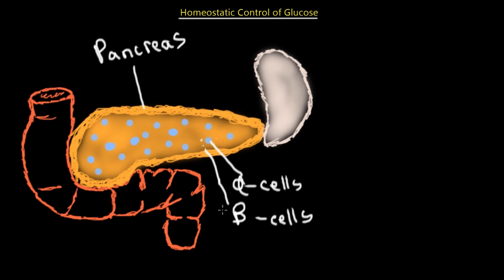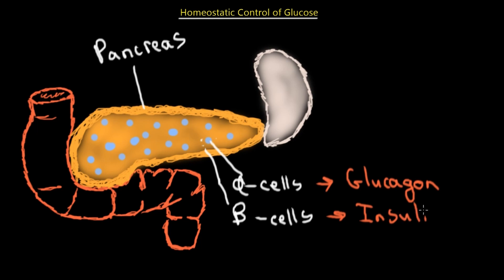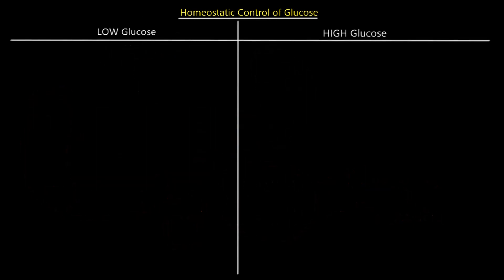The alpha cells secrete glucagon and the beta cells secrete insulin. We'll discuss the function and mechanism of both hormones, but for now it is important to note that the entire homeostatic control is managed by the pancreas through its alpha and beta cells, which act as both detectors and the control mechanism.